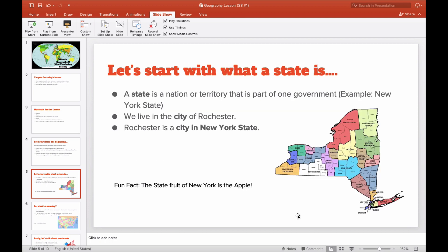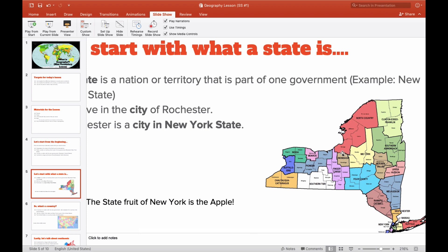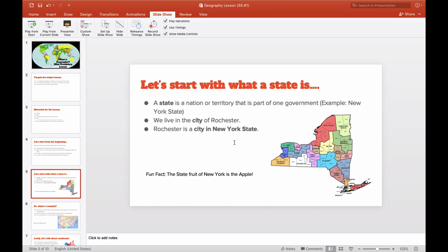So let's start with what a state is. A state is a nation or territory that is part of one government. For example, New York State. So all of this right here is New York. This is New York State. We live in the city of Rochester. So Rochester, I don't know if I can zoom in super close. Here's Monroe County. So this is where Rochester is. Here's Buffalo. Syracuse should be around here somewhere. Rochester and Buffalo are examples of cities. So Rochester is a city in New York State.